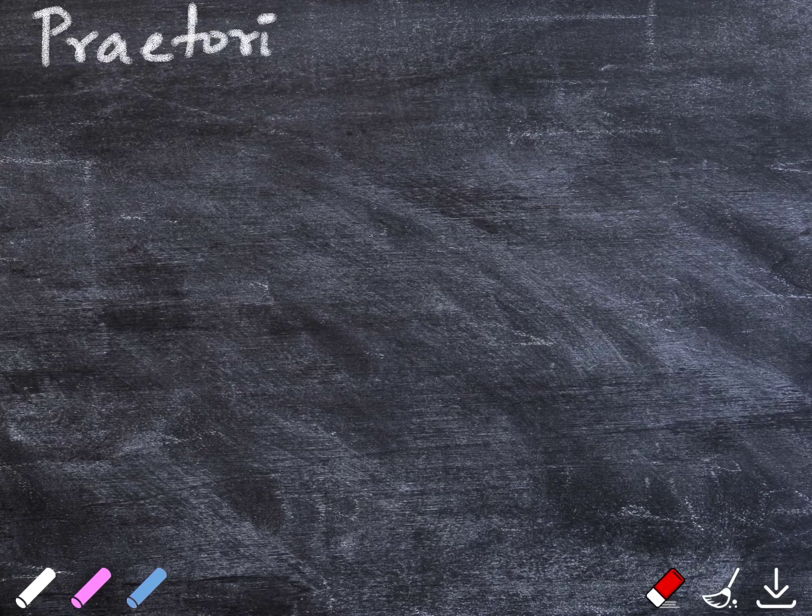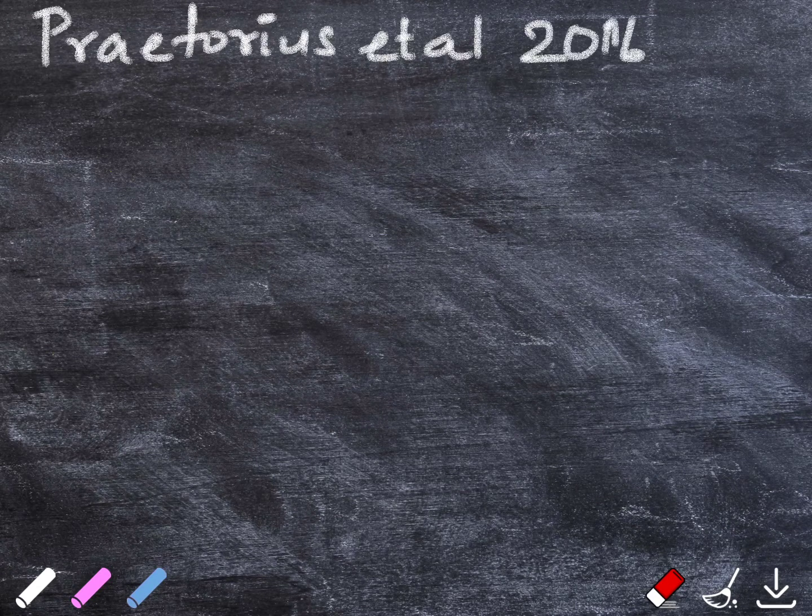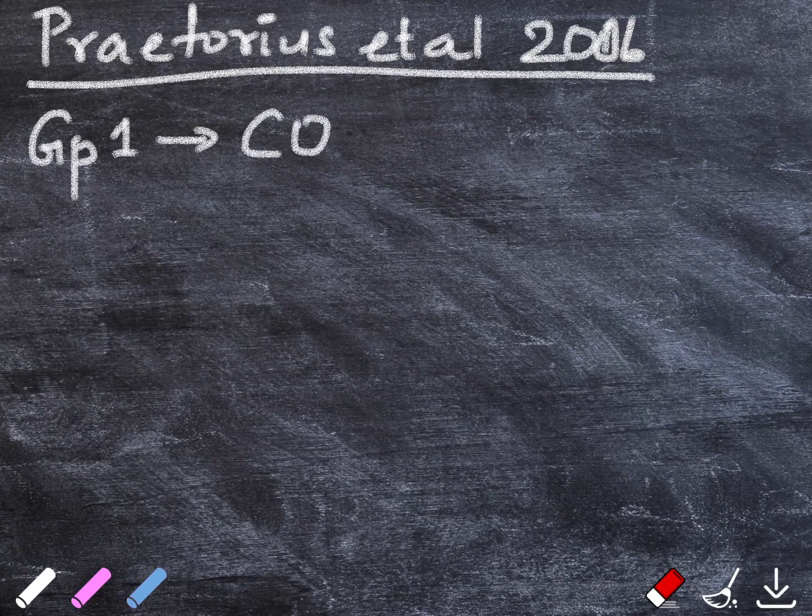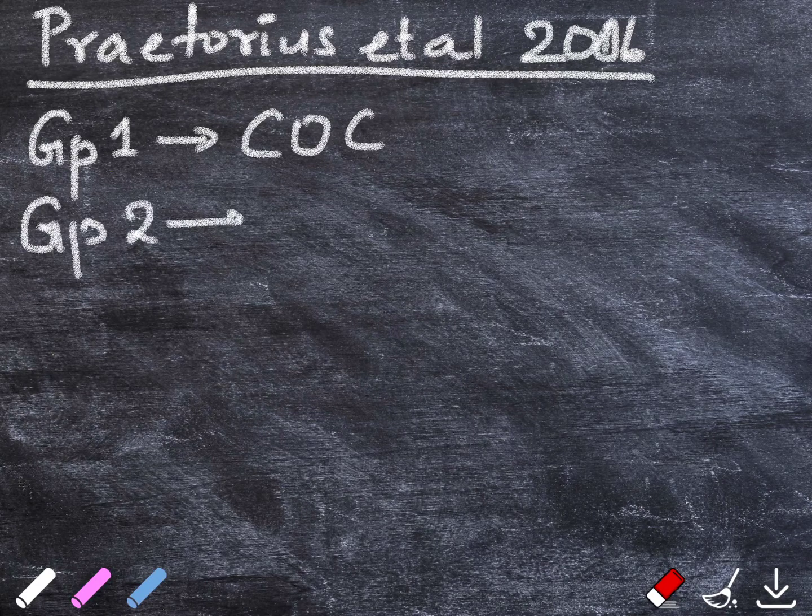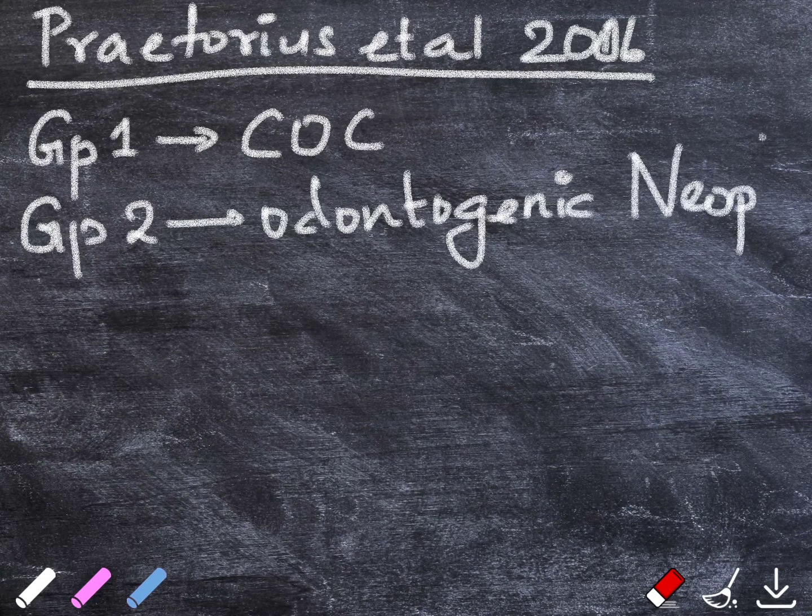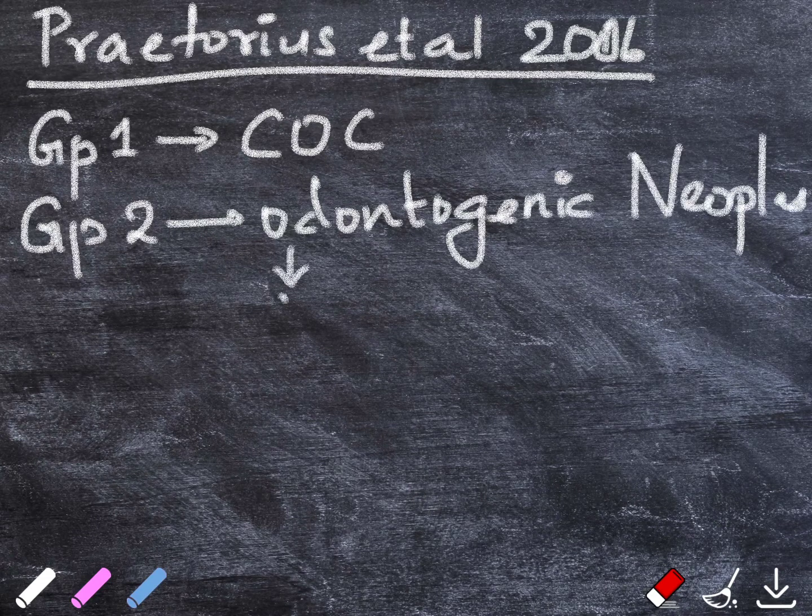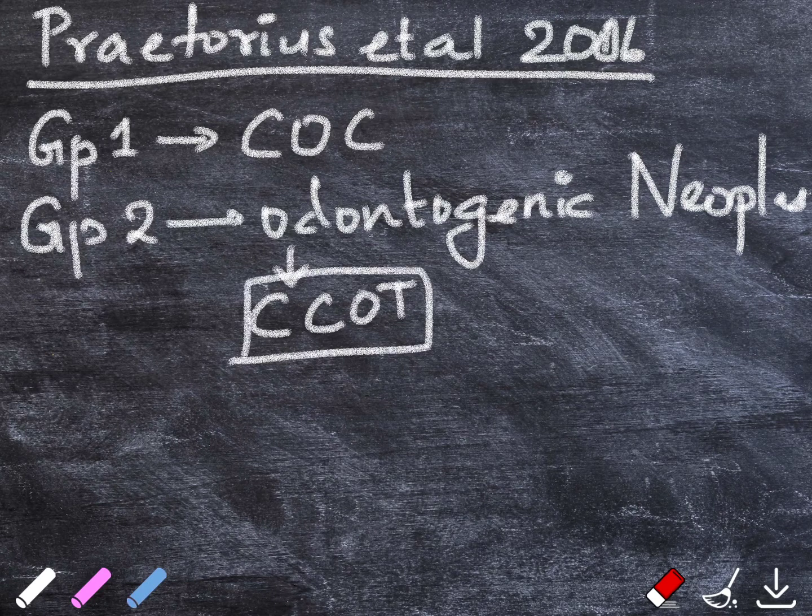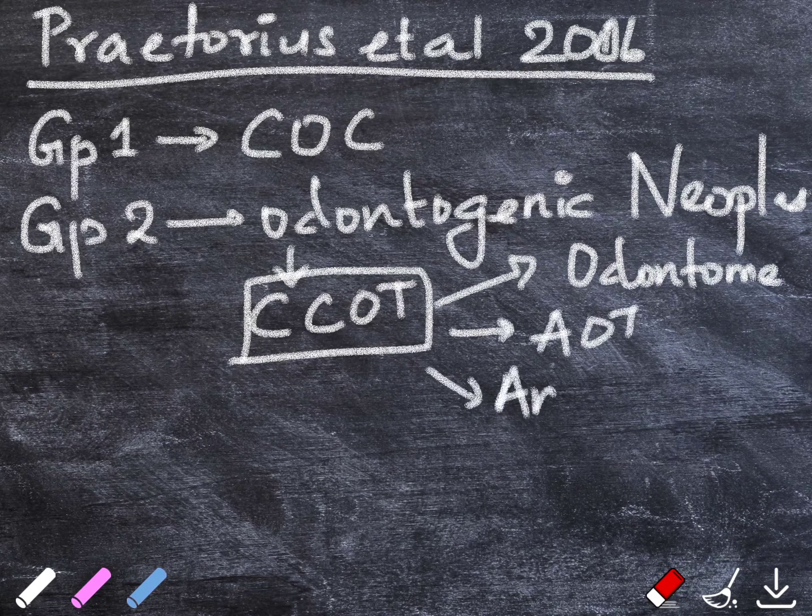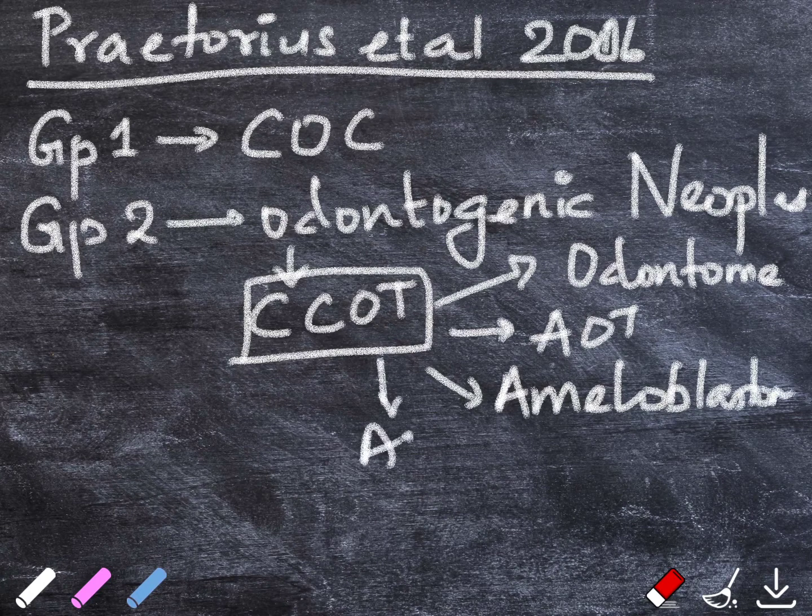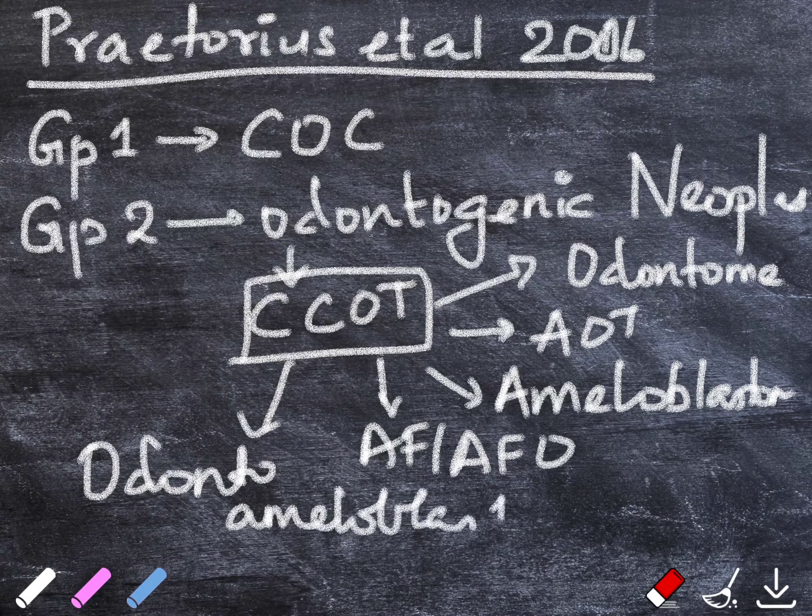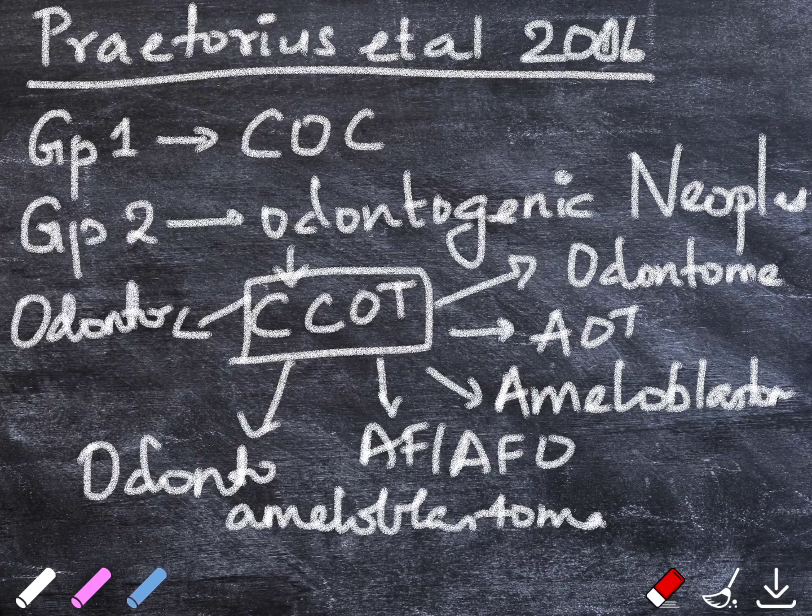Praetorius, again in the year 2016, suggested through communication a classification for ghost cell lesions. Group 1 comprised of a simple cyst, the calcifying odontogenic cyst. Group 2 was a cyst associated with an odontogenic hamartoma or a benign neoplasm, like calcifying cystic odontogenic tumor with combinations of those occurring with an odontoma, those associated with adenomatoid odontogenic tumor, ameloblastoma, ameloblastic fibroma or fibroodontoma, odonto-ameloblastoma, and finally with an odontogenic myxoma or fibroma.